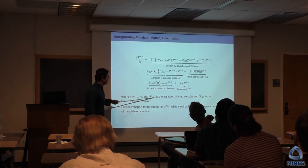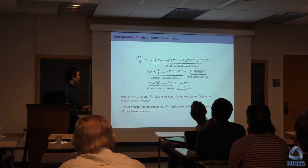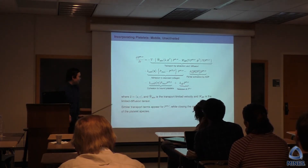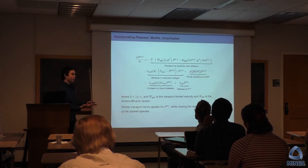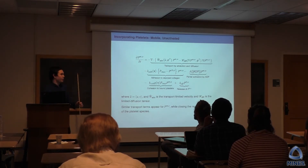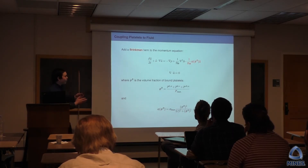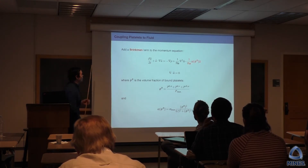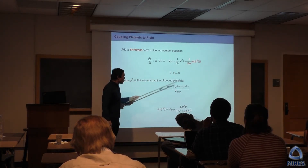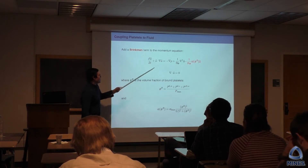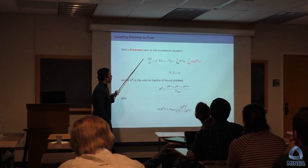I don't have time to go into what all those terms are — they're quite involved numerically. For the mobile sticky platelets, we have a similar PDE. The rest of the species are assumed to not move because they're bound, so they're just ODEs at each point on the domain. How do we feed the platelet model back to the fluid dynamics? The volume fraction of all bound platelets limits velocity and acts as a porous medium. We capture that by adding a Brinkman term to our incompressible Navier-Stokes equations.